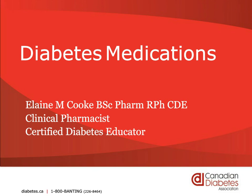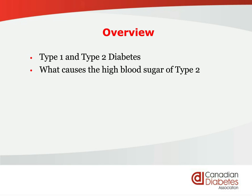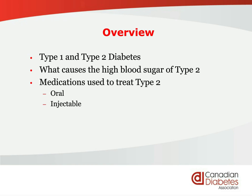Good evening, everyone, or good afternoon if you're on the West Coast. We're going to cover the differences between type 1 and type 2 diabetes, what causes the high blood sugar of type 2, the medications used to treat type 2 diabetes — the oral medications, the injectable medications, and insulin — and then a little bit of information about hypoglycemia.